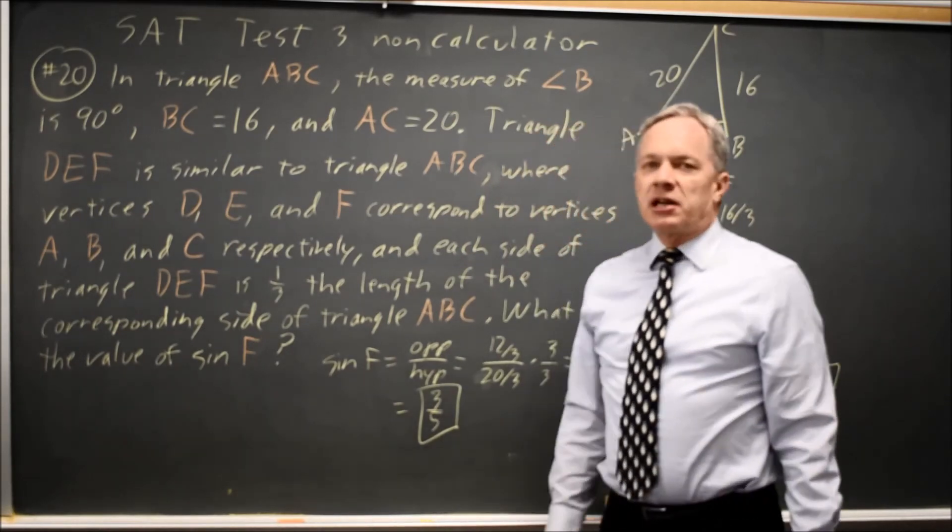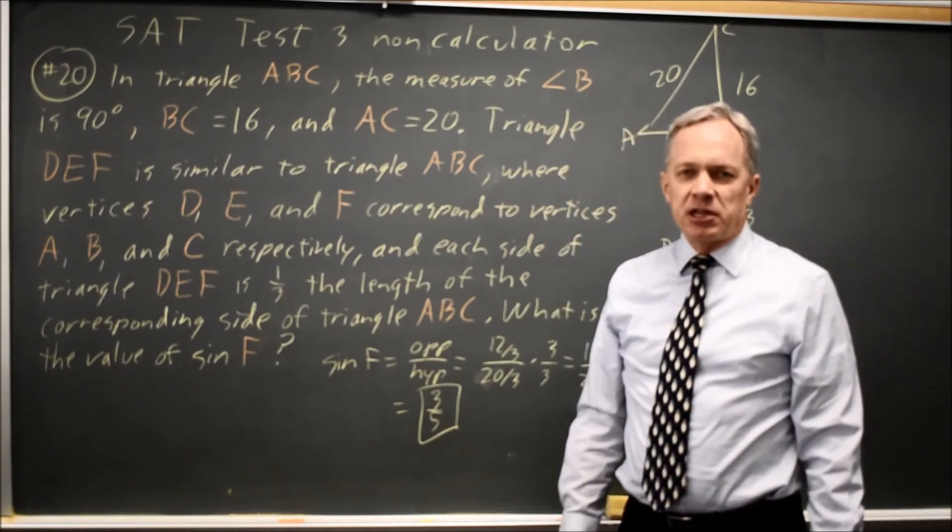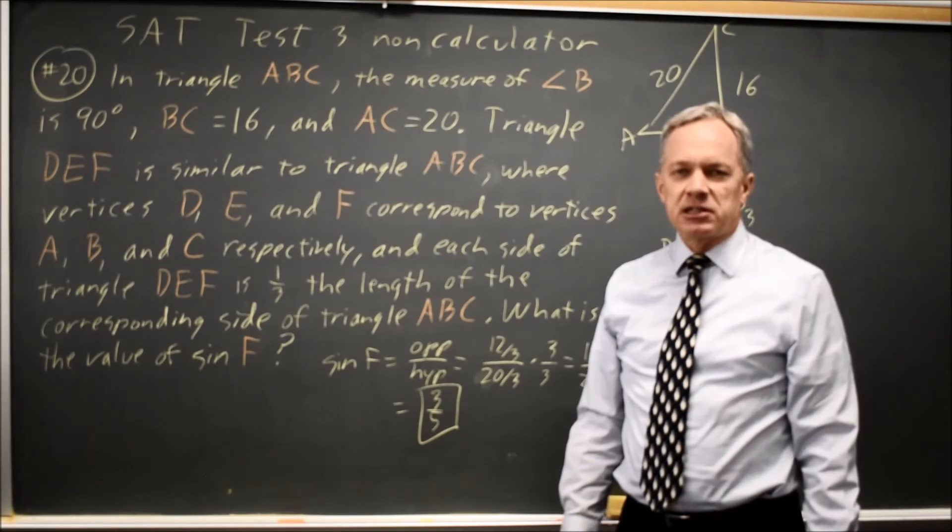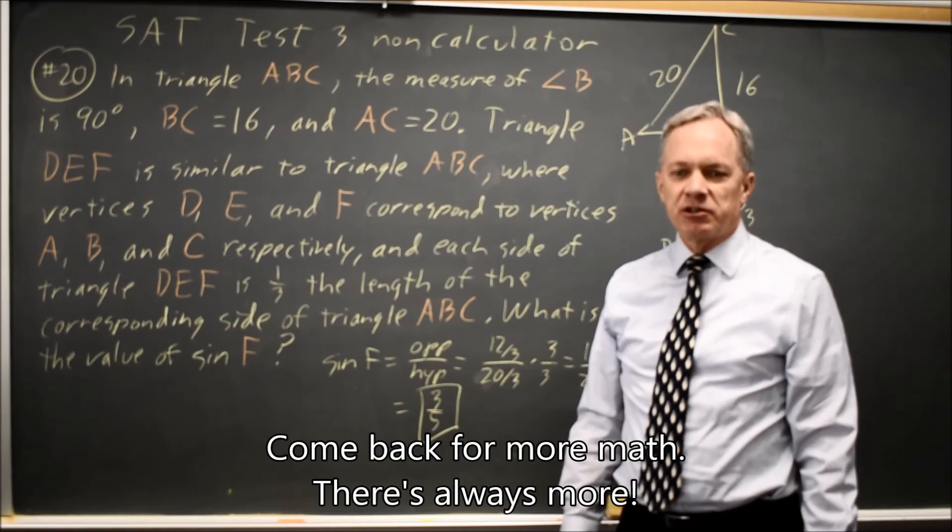We should always remember that the sine of an angle in a right triangle is the opposite side over the hypotenuse, and the cosine is the adjacent side over the hypotenuse. College Board is likely to ask you one question on trigonometry during your SAT.